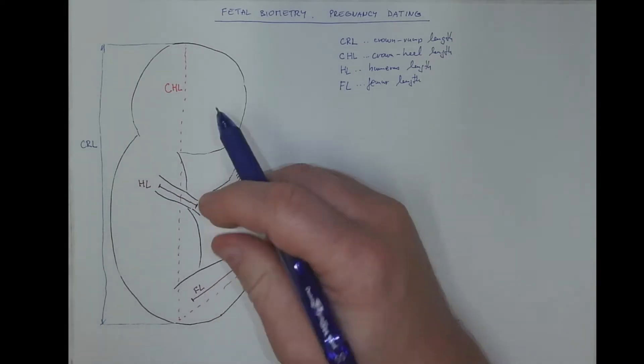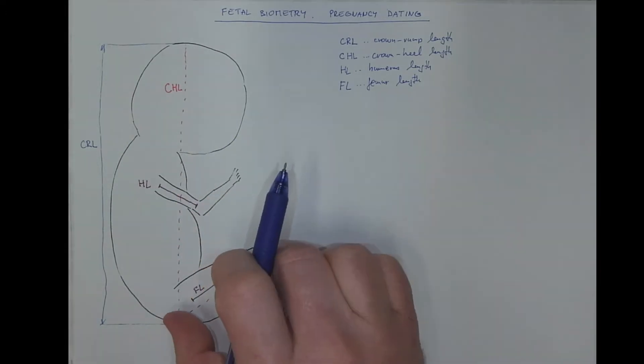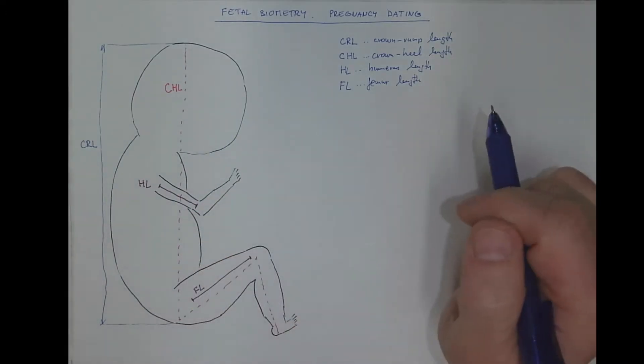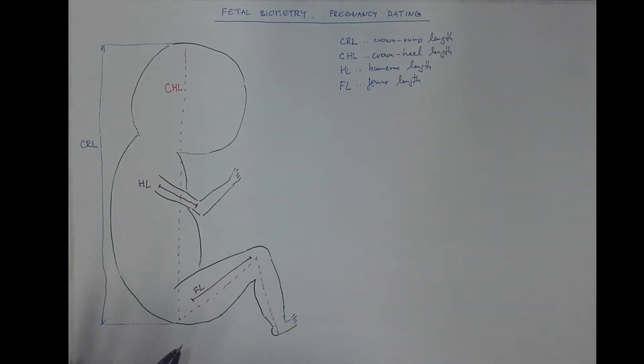Due to the ossification, you can get nice echo from the bone tissue. And also the maximum abdominal circumference.